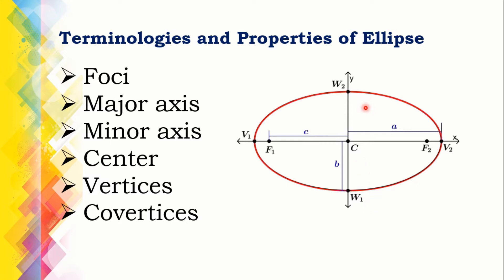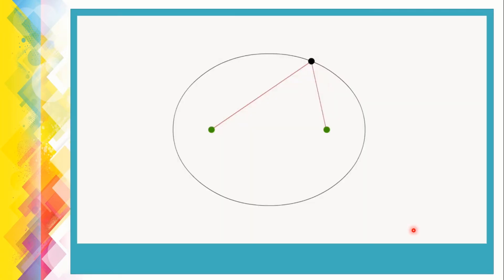The distance from the center to a focus is denoted by C. The distance from the center to a vertex is denoted by A. The distance from the center to a co-vertex is denoted by B. Another video clip will be presented here to clearly illustrate the properties of an ellipse.